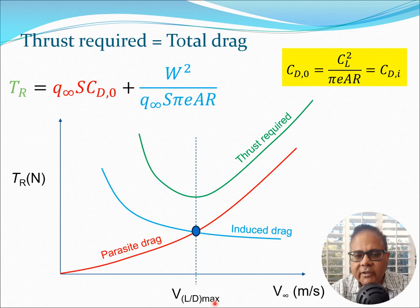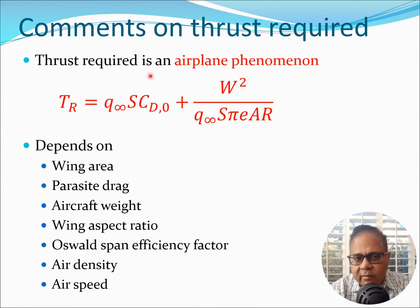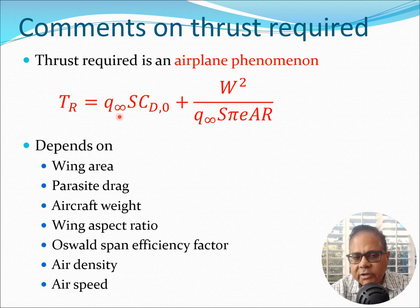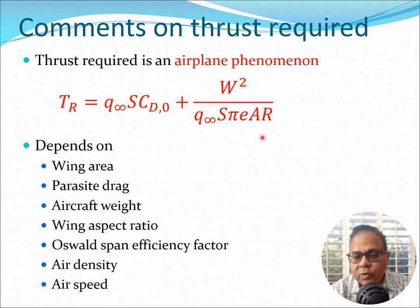The minimum point corresponds to the velocity at which L/D max occurs and thrust required is at its minimum value. Thrust required is an airplane phenomenon — all aspects of the equation depend on the airplane and parameters such as air density and airspeed. The equation tells us that thrust required depends on the wing area S, parasite drag C_D0, aircraft weight W, wing aspect ratio AR, Oswald span efficiency factor e, and the density and airspeed.